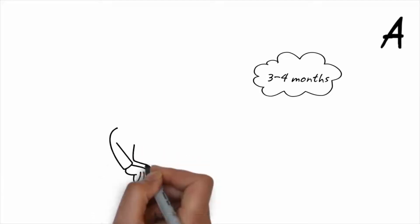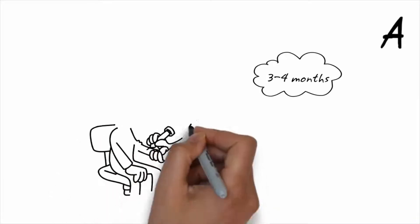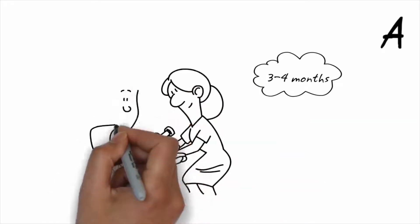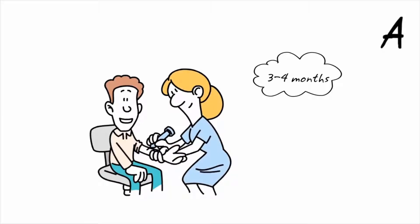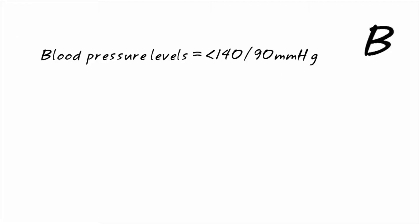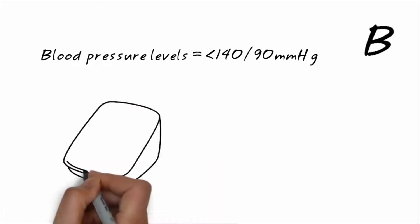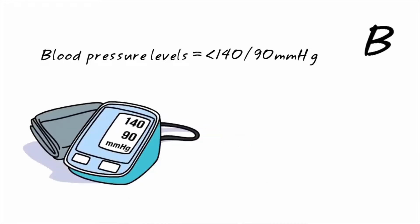Test your HbA1c every three to four months. Although the target differs for everyone, most should aim to achieve HbA1c levels below 7%. Blood pressure levels should ideally be below 140 over 90 mmHg.